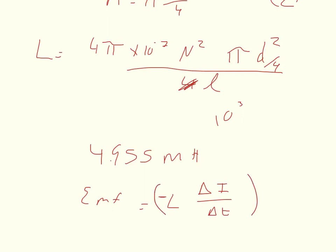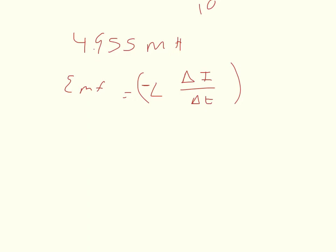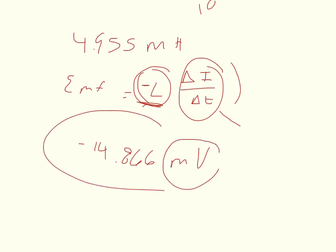When I plug in the values, I get negative 14.866 millivolts. Since the answer is in millivolts, you can keep the inductance in millihenries when you do your work. Make sure the current rate is still in amps per second, but the inductance can stay in millihenries and it will naturally convert to millivolts.